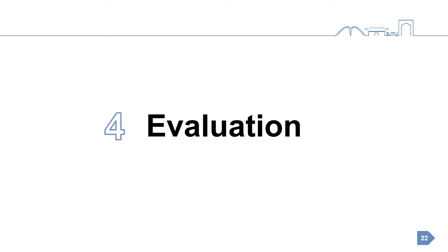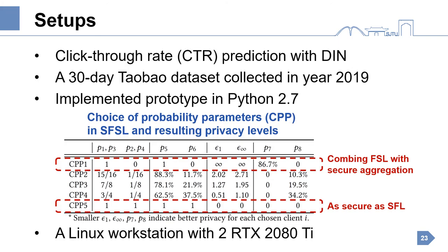Let's get into the evaluation part. We consider the click-through rate prediction task with DIN model. We used a Taobao dataset collected last year. We implemented the prototype and let each client use the same choice of probability parameters, or CPP for short. We tested five different CPPs as shown in the table. As the serial number of CPP increases, the privacy of our SFSL becomes stronger. In particular, CPP1 is federated submodel learning with secure aggregation, while CPP5 is as secure as the baseline SFL. Our running environment is a Linux workstation.